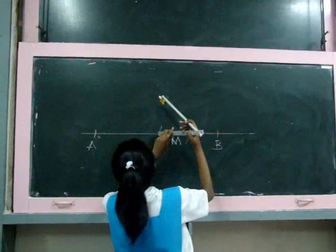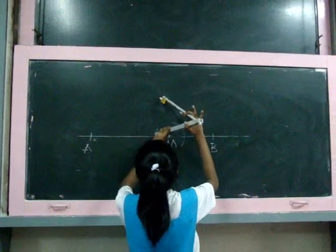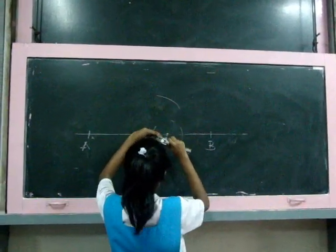Step 2: Place the point of the compass at P and draw a small arc as shown.